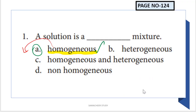A solution is a homogeneous mixture. There are two types of mixtures: homogeneous and heterogeneous. In a homogeneous mixture, components mix uniformly. For example, if you mix salt in water it becomes a solution. So all solutions are homogeneous mixtures - option A is the right answer.